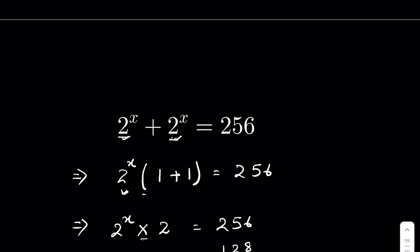We can check the answer. 2 to the power x means 2 to the power 7 plus 2 to the power 7, and 2 to the power 7 is 128. So 128 plus 128 is equal to 256. Left hand side equals right hand side, so our answer is proved.